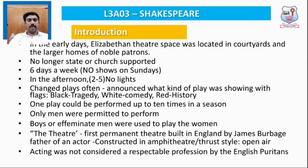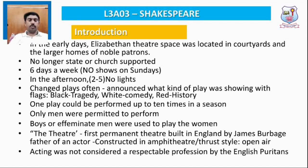Elizabethan theatres were located in courtyards and larger homes of lords and noble patrons. Actors had to perform in noble homes as entertainment whenever lords demanded it. Theatres were no longer supported by the government or the church. Performances were held six days a week continuously, with no shows on Sundays — the Sabbath day. Dramatic performances were held only during the afternoon, between 2 to 5 p.m., with no lighting provisions, so plays had to be completed before sunset.